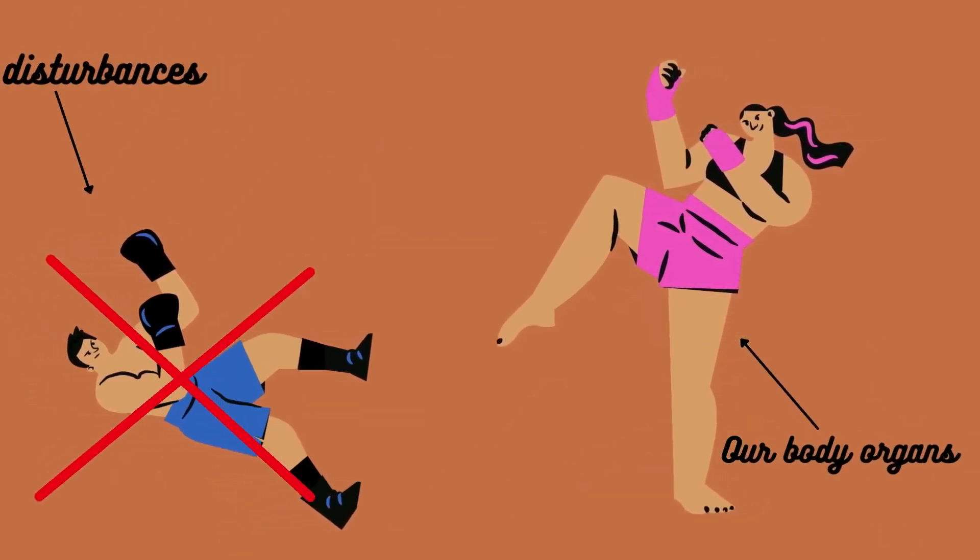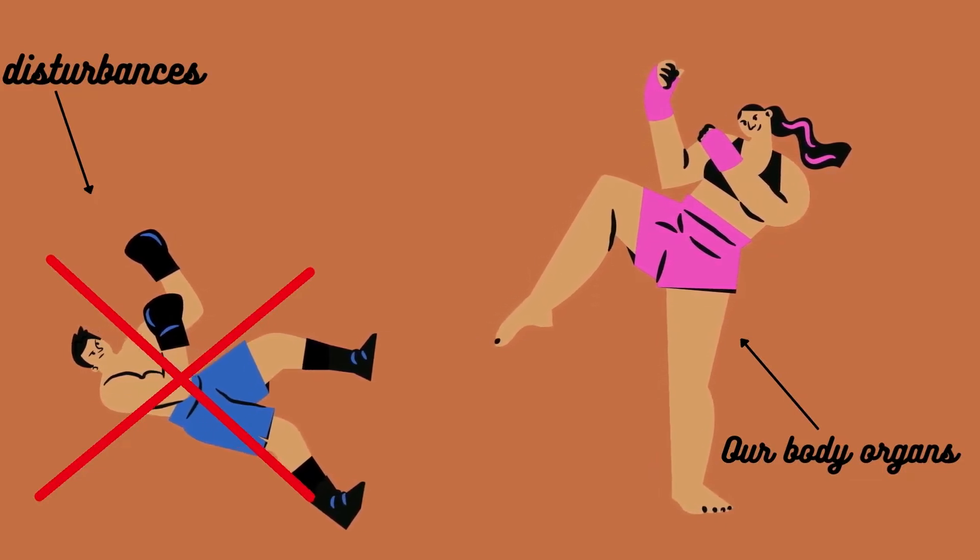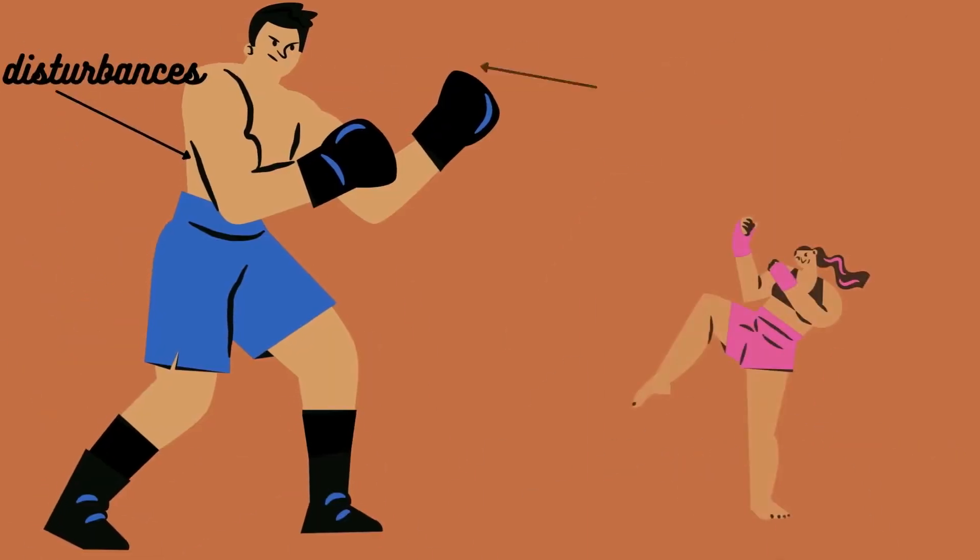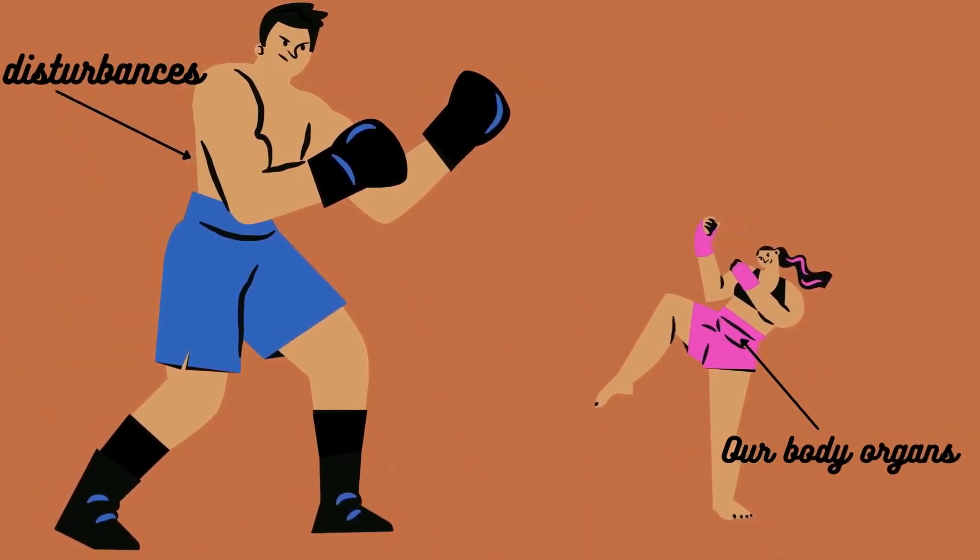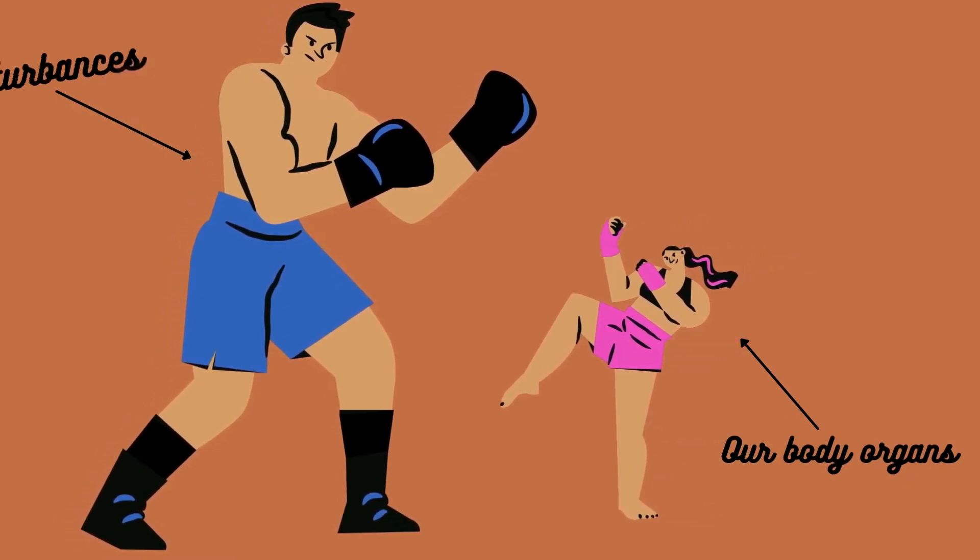Depending on this fight, we might have two case scenarios: either the disturbance is temporary and the balance in our body is restored quickly, or the disturbance is intense and prolonged, and this might result in poisoning or severe infections.